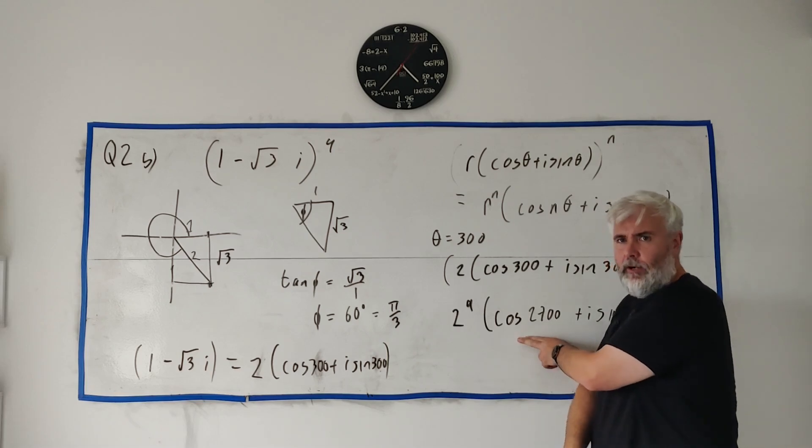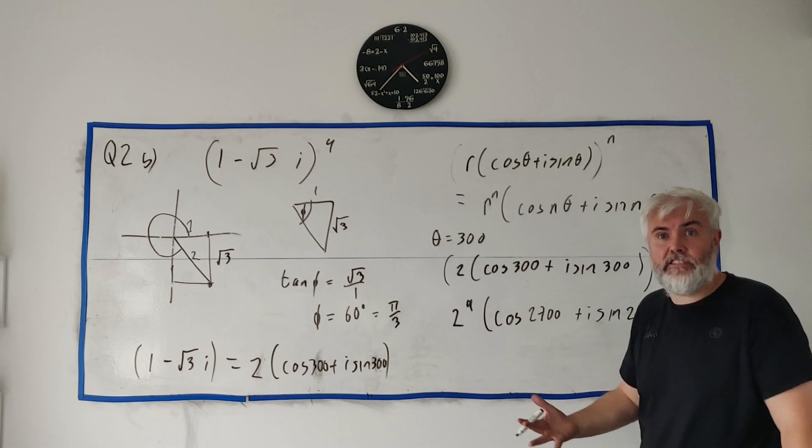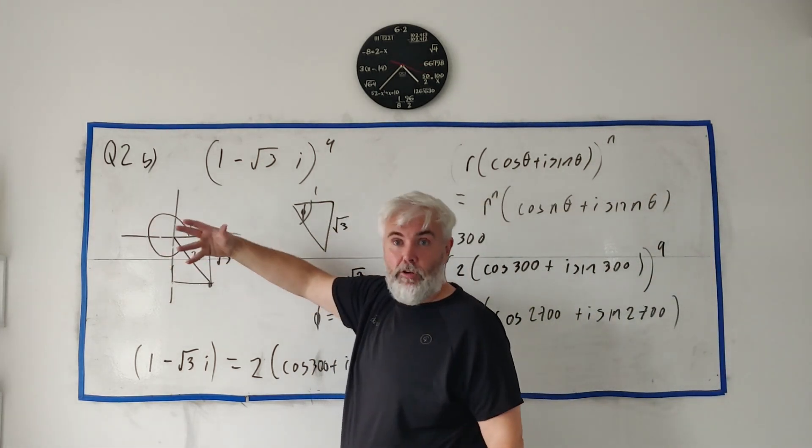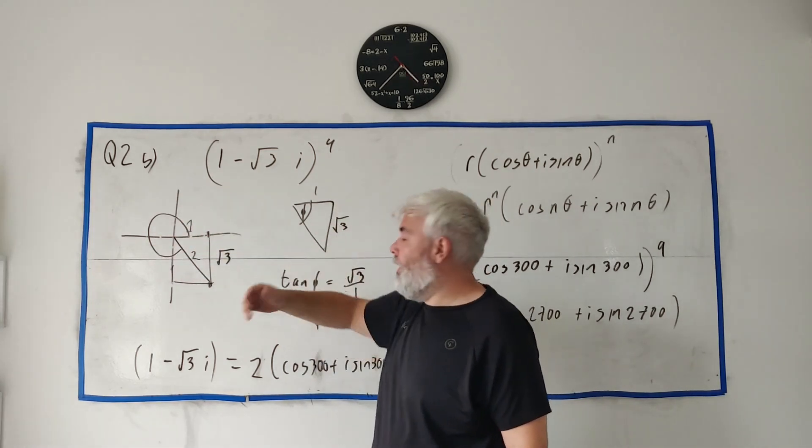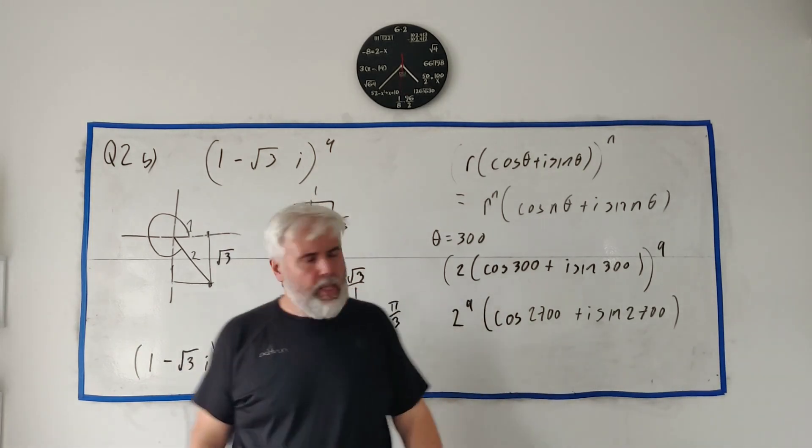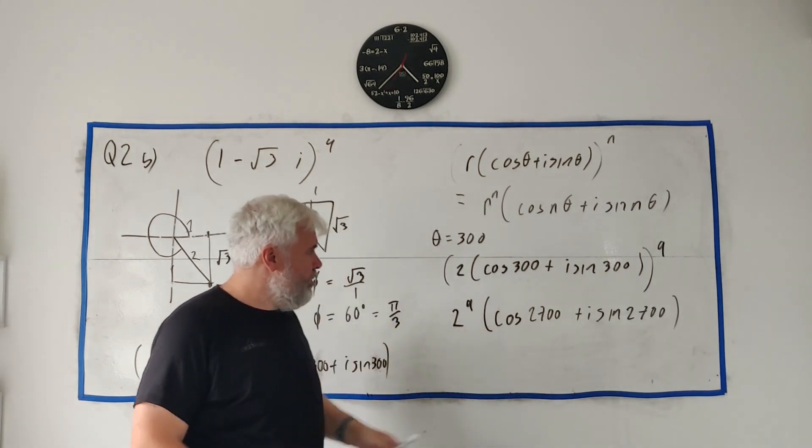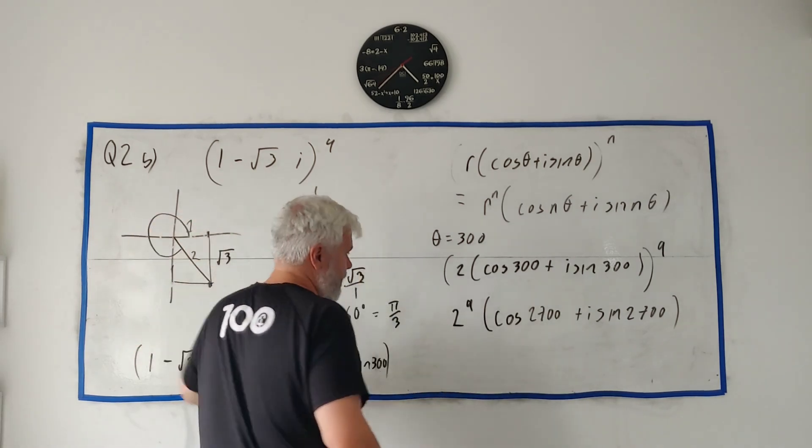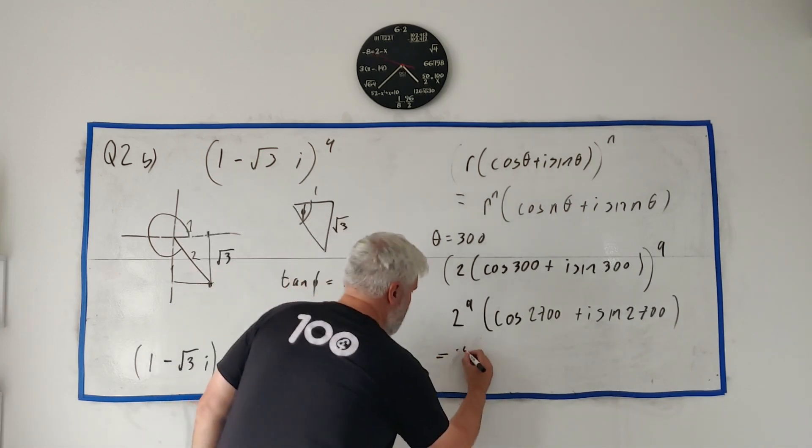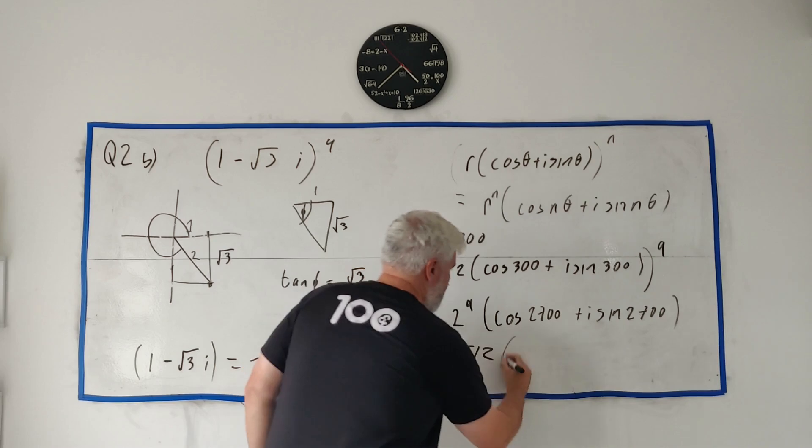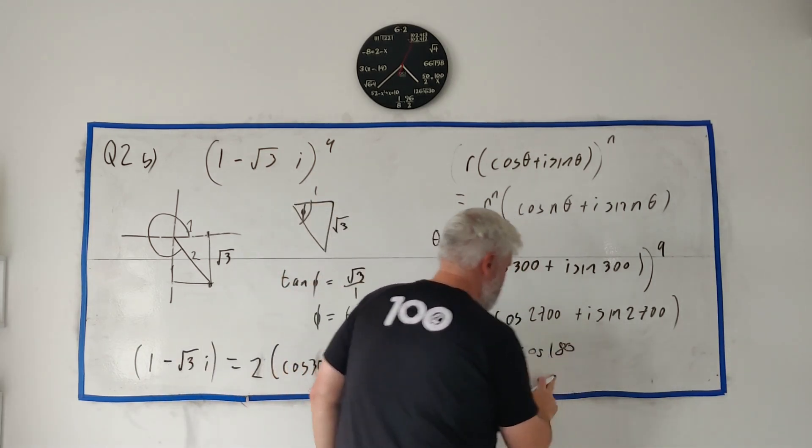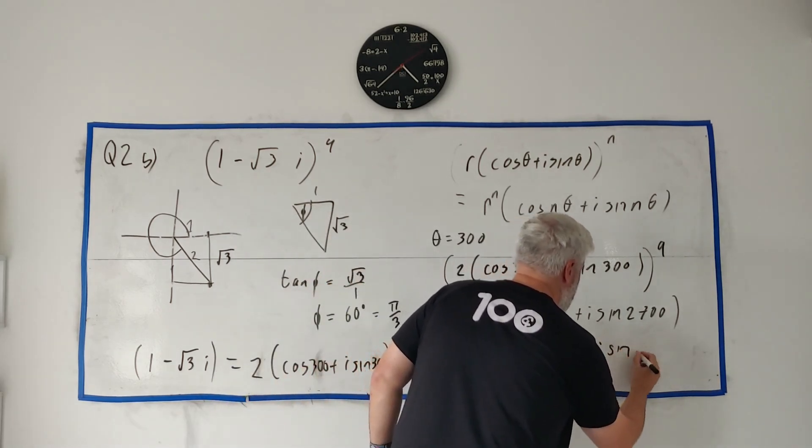And then at this point, you could just put this in a calculator. Cosine 2,700 will just give you the answer we're looking for. But also, you can just remember 360 is the same as 0, it's the same as 720, it's the same as 1080. So we can just see how many times does this rotate? Divide 360 into this. And we get, I believe it was 7.5. So this goes around 7.5 times. So a half means this is the same as 2 to the power of 9, cosine - sorry, 2 to the power of 9 is 512. So 2 to the power of 9 is just 512. Cosine 2,700 goes around 7.5 times, so it's the same as going around a half, 180, or again in radians, just pi. Plus I sine 180.